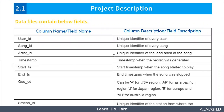Now we will understand how the data looks. In our dataset, there are various fields. The first field is user ID — a unique ID given to each and every unique user. Next is song ID — similar to user ID, every unique song will have a unique ID. Third is artist ID — the artist who has sung the song will have a unique ID. Next is timestamp — the timestamp at which the record was generated. Then start_TS — the timestamp at which the song was played. When you hit the play button, start_TS records that particular time and it gets filled in the data.